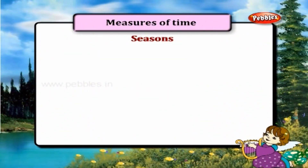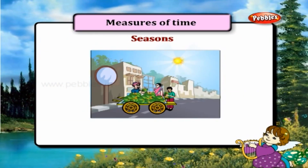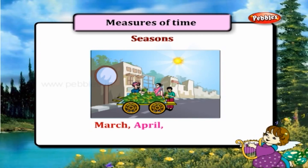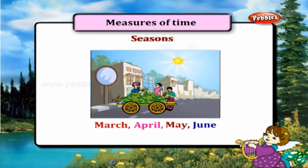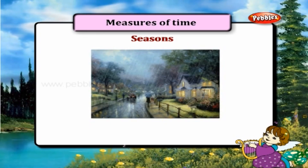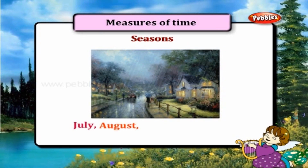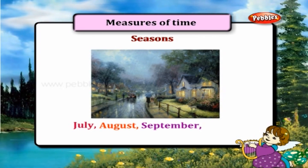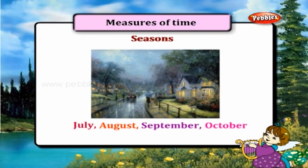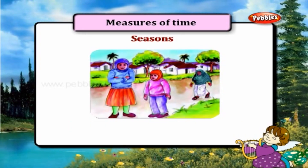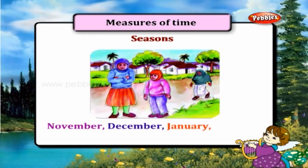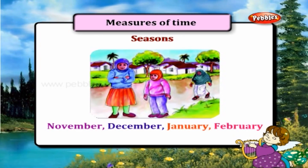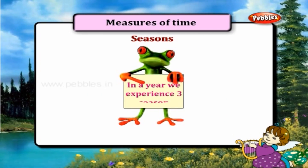Seasons: Summer Season — March, April, May, and June. Rainy Season — July, August, September, and October. Winter Season — November, December, January, and February. In a year, we experience three seasons.